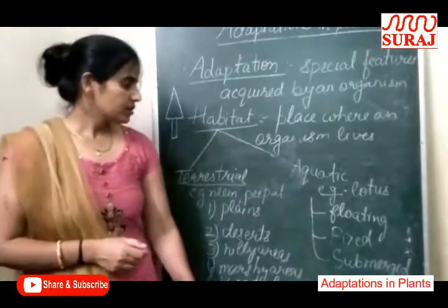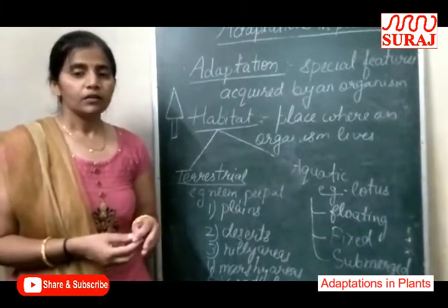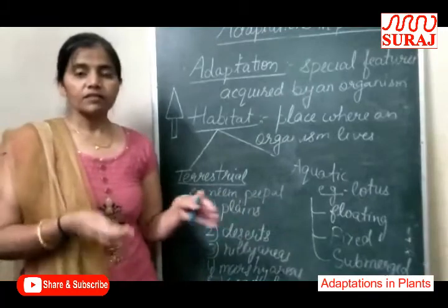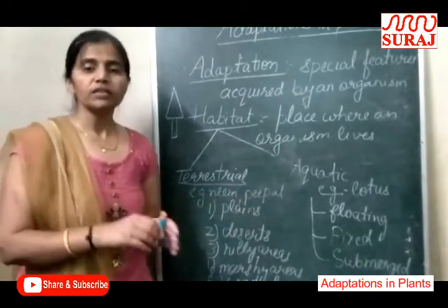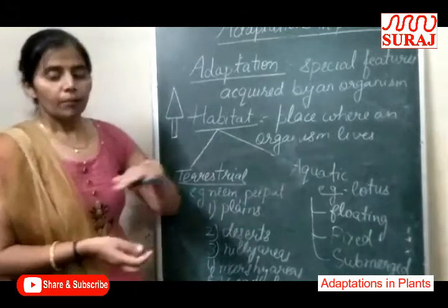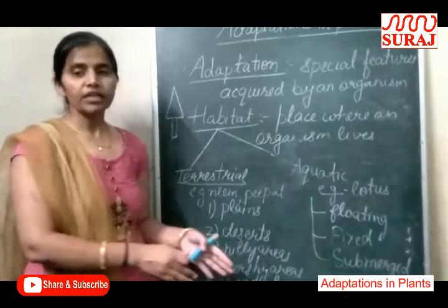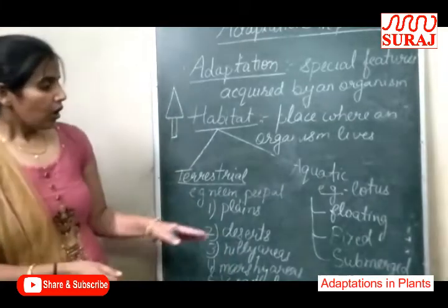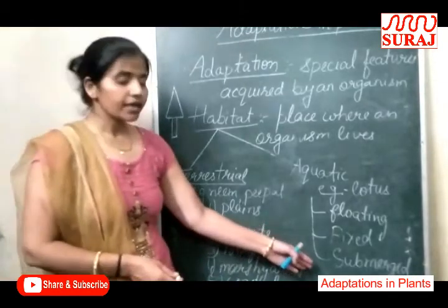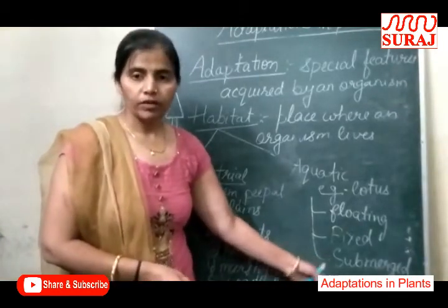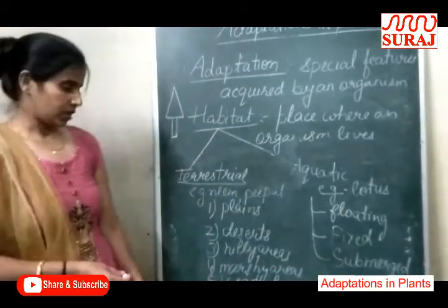Third is Submerged plants. Examples: Tape Grass, Pond Weed. These roots are well developed and these plants are fully submerged in water — ye plants paani ki water body mein, pond ya lake mein, bilkul tali mein paaye jaate hain. Aur ye photosynthesis process bhi karte hain, lekin jo oxygen aur carbon dioxide hai, vo water se hi absorb karte hain.